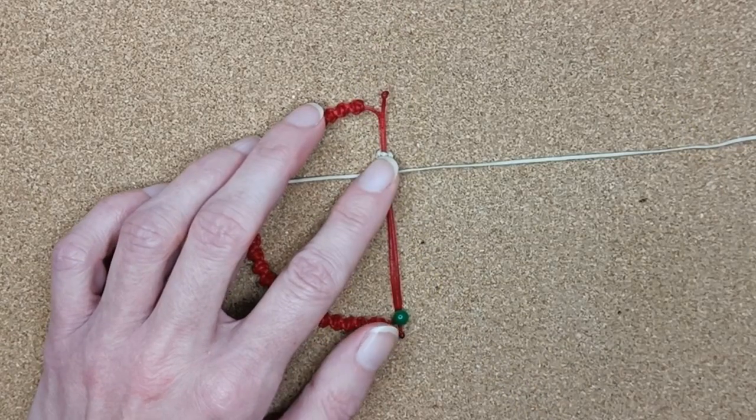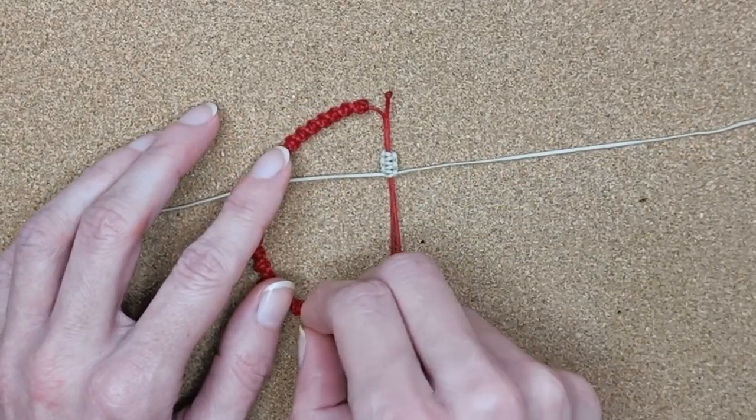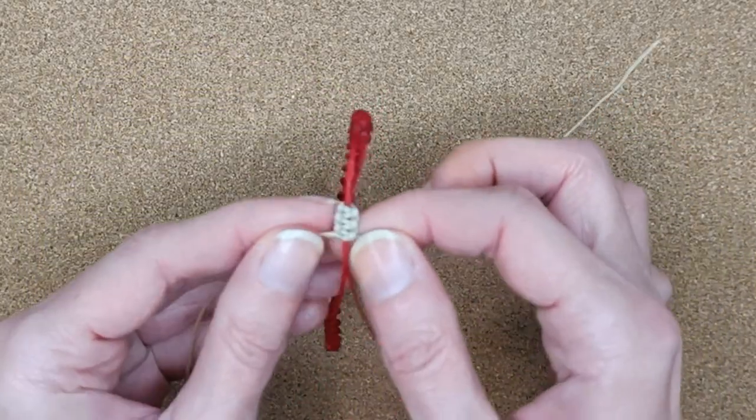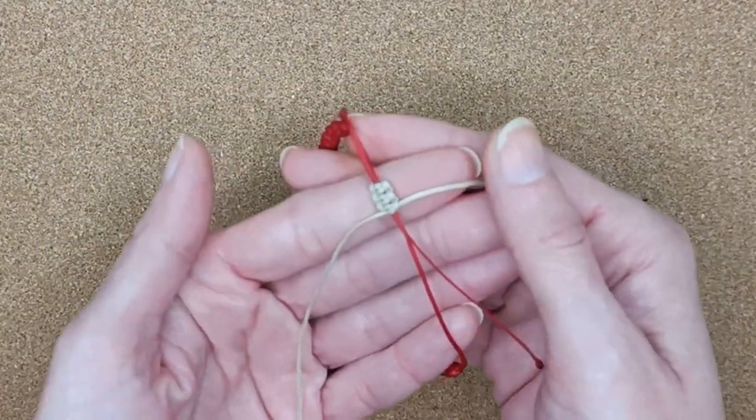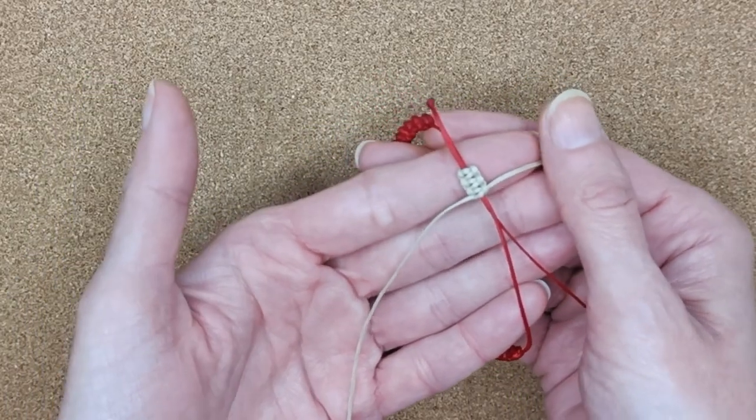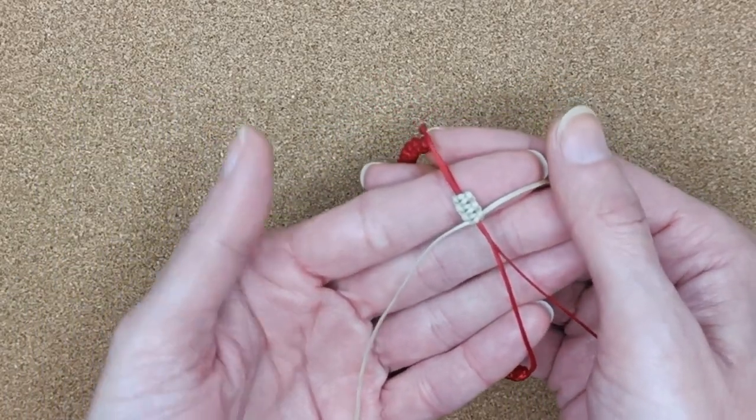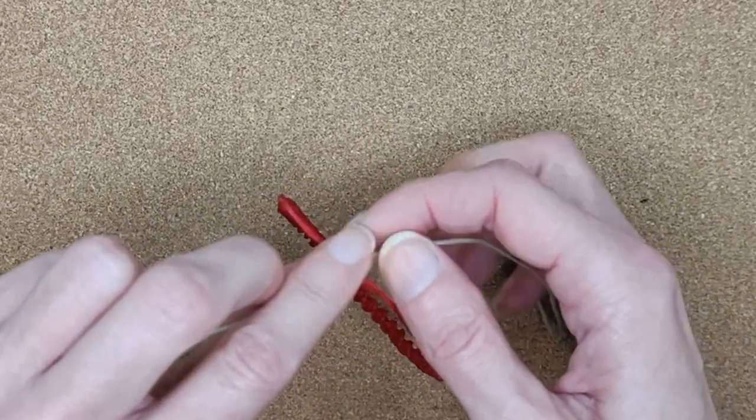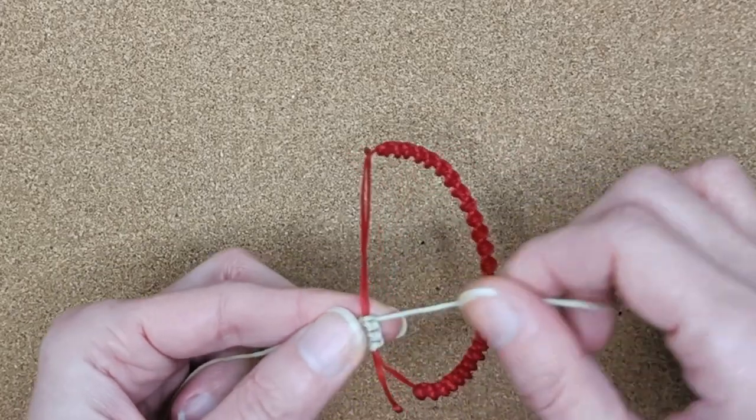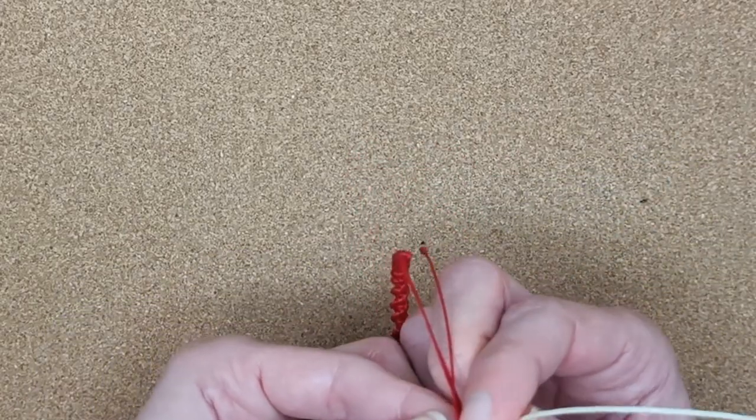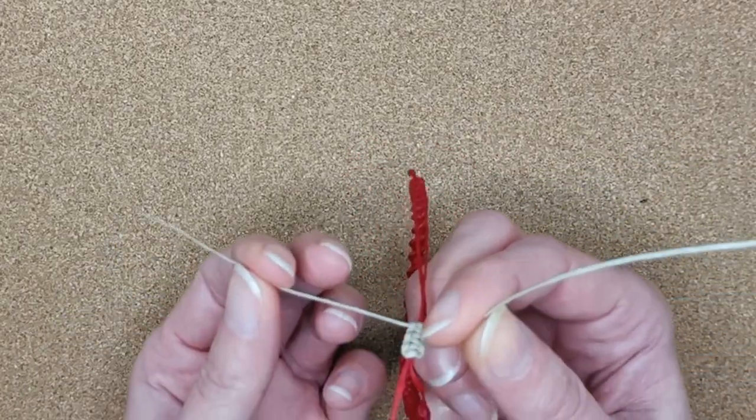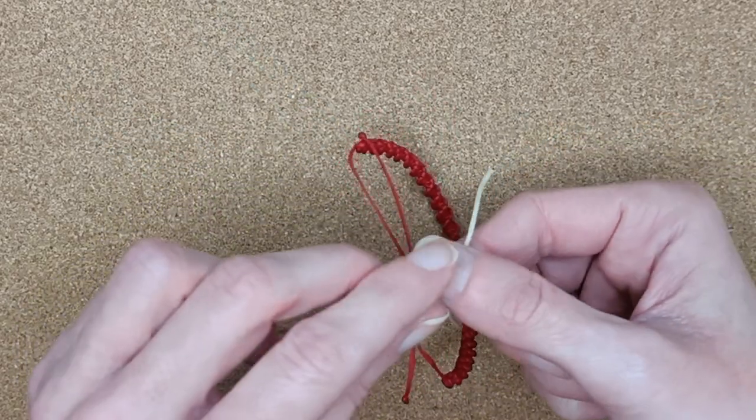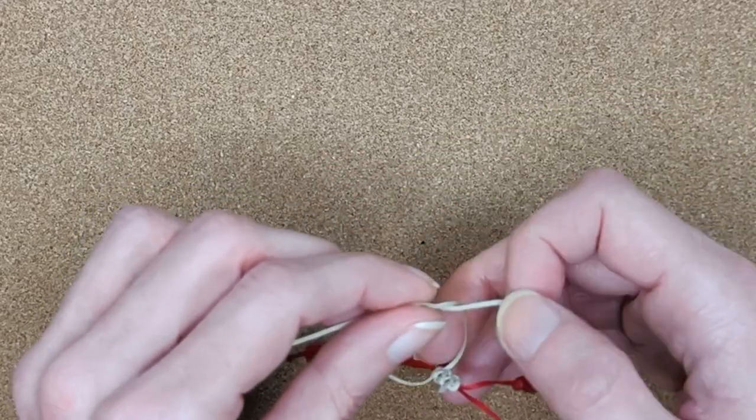You can cut the excess cord and slightly burn the edges, but I will give you my pro tip. I make, on the back side of my closure, one simple overhead knot and then cut the edges of my cords and burn them. This way, I can be sure my closure is totally secure.